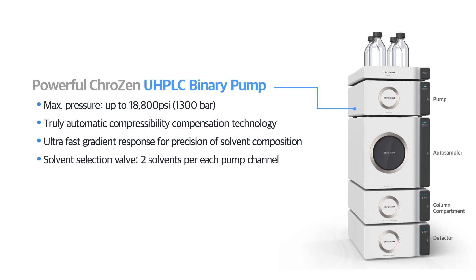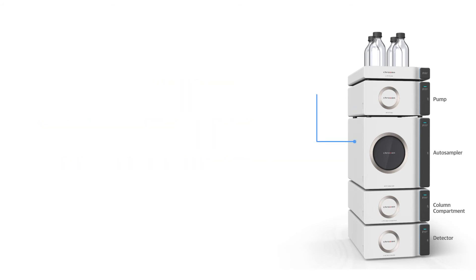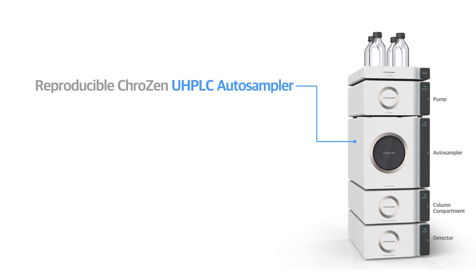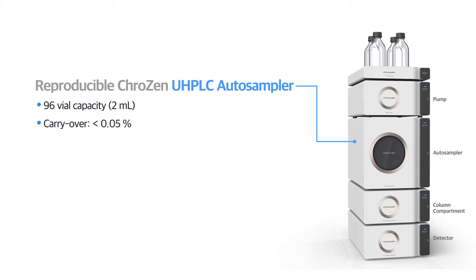Two solvents can be connected to each pump channel. The reproducible Crozen UHPLC auto sampler has 96 of 2 milliliter vial capacity and the carryover is under 0.05 percent.